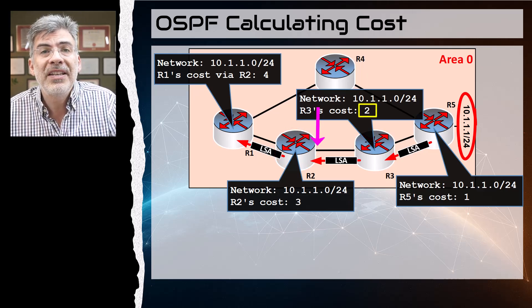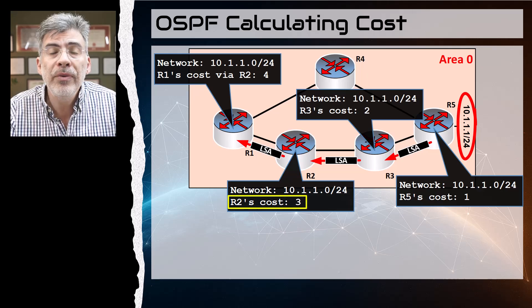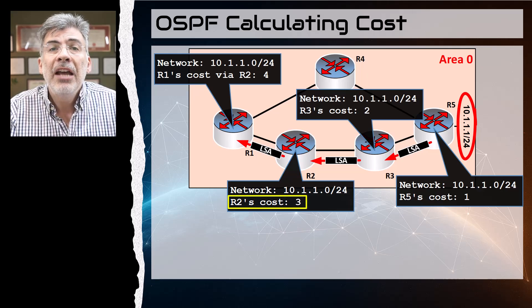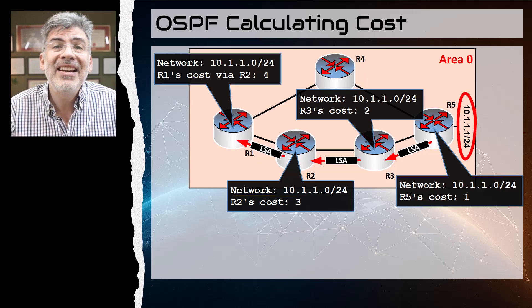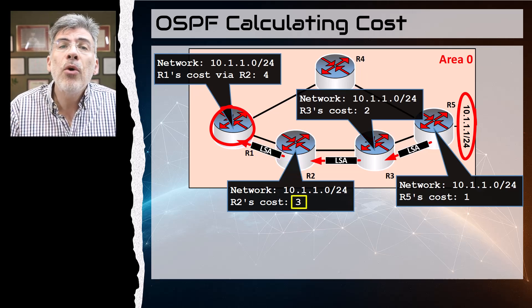And R2 then adds its own cost of this destination network-facing interface, which is one, so it places an accumulated cost of three in its own LSDB. And finally, R2 advertises another LSA to R1 containing a cost of three associated with that network.